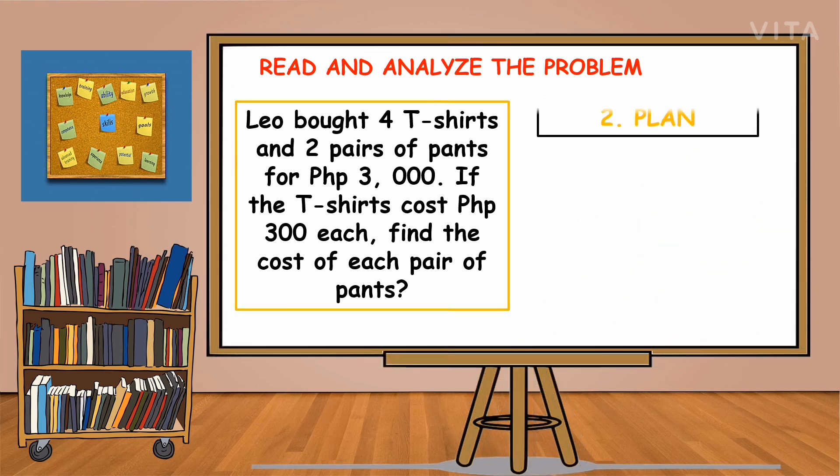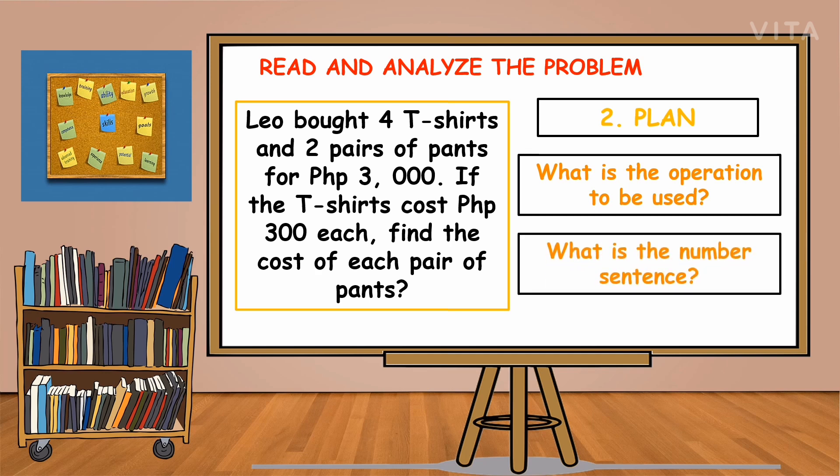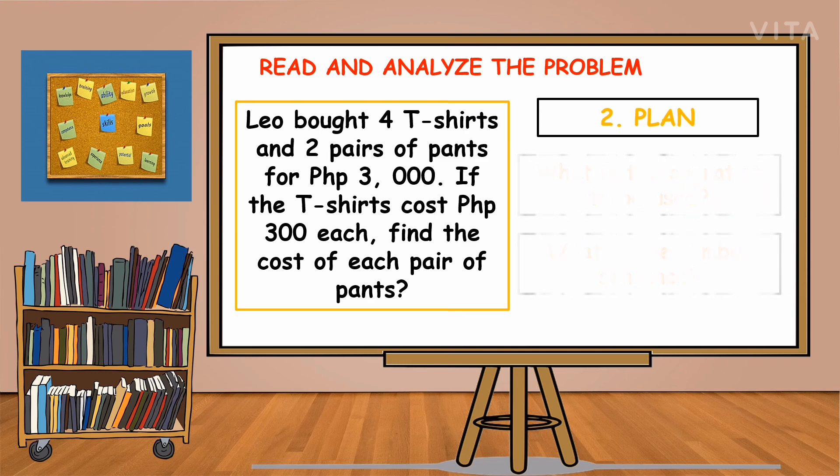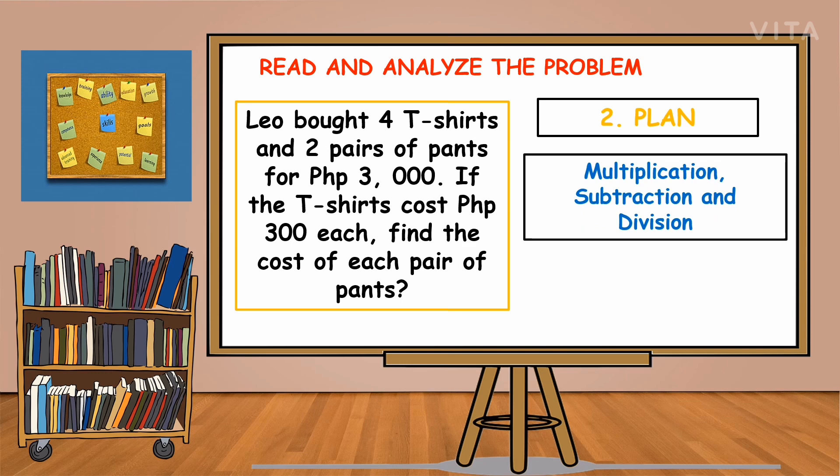The second step is to plan. We're going to plan what operation to be used and what is the number sentence. The operations we're going to use are multiplication, subtraction, and division. The number sentence will be 3,000 pesos minus the quantity of 300 pesos multiplied by 4, then the answer will be divided by 2 is equal to n.